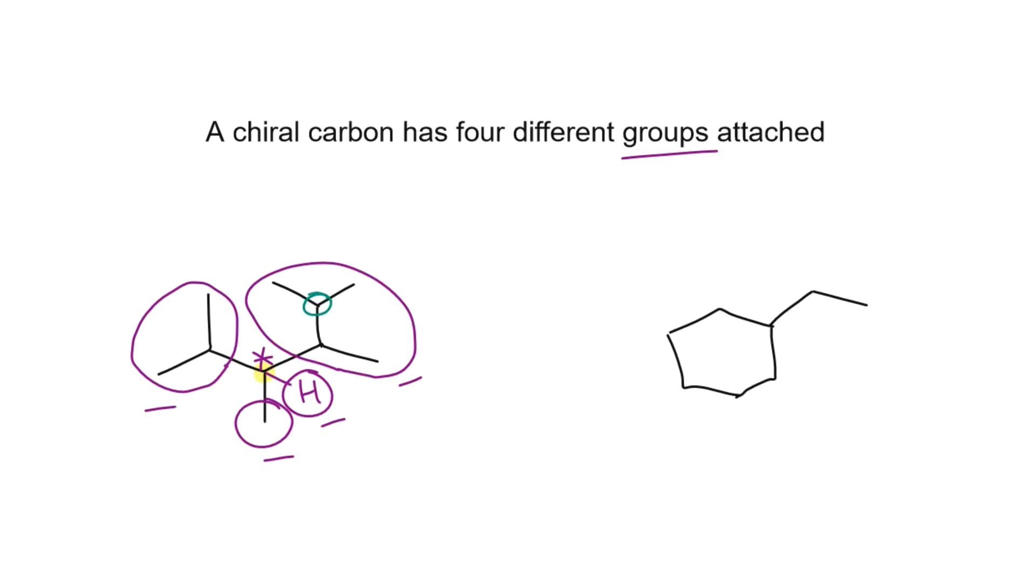Note that this carbon, for example, is not chiral since it has two groups, two methyl groups that are the same.